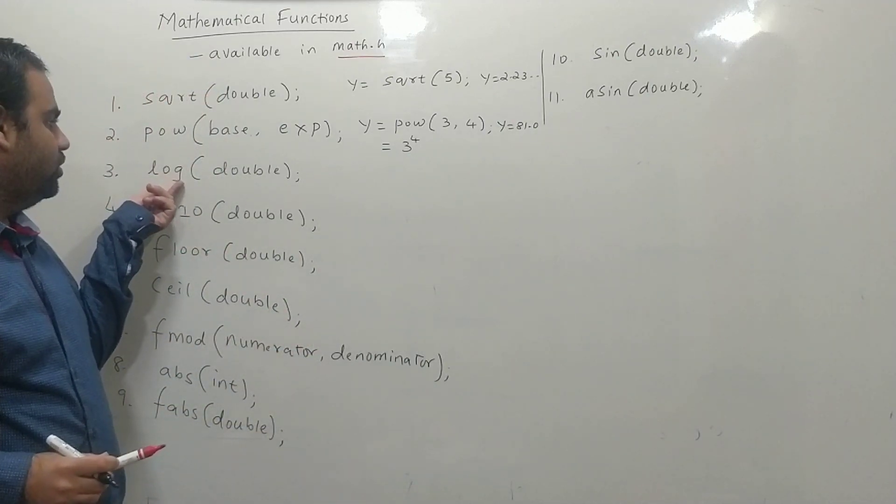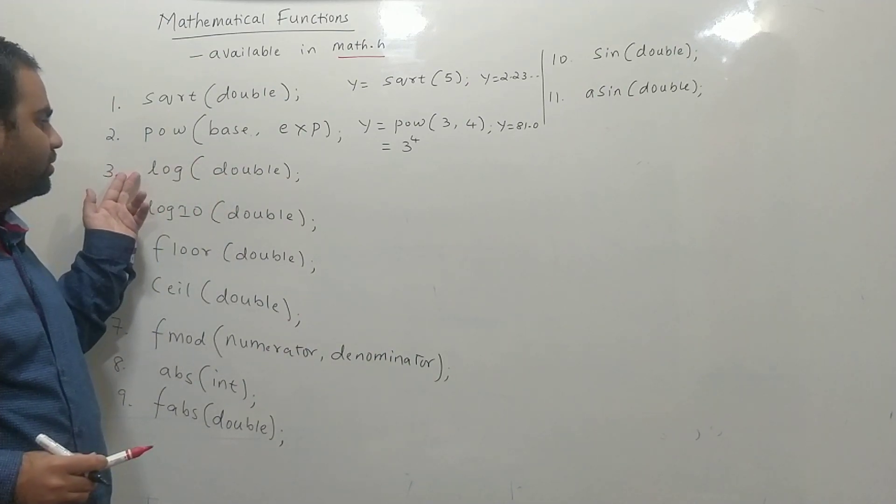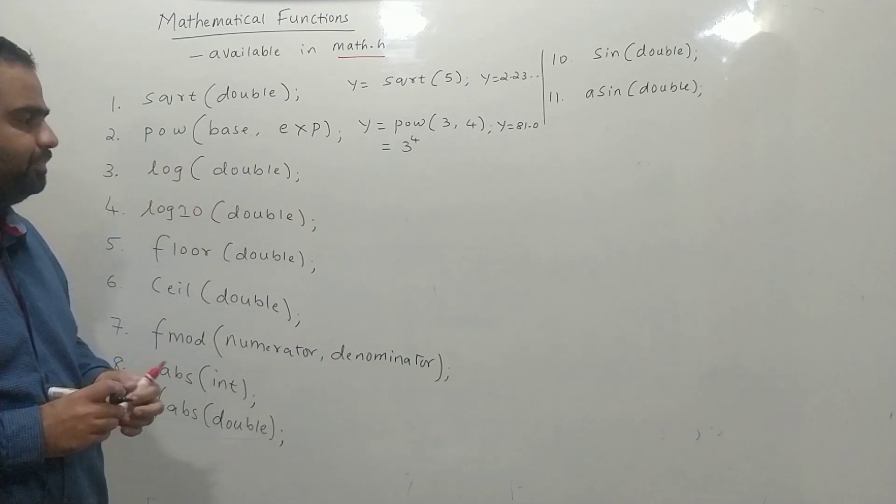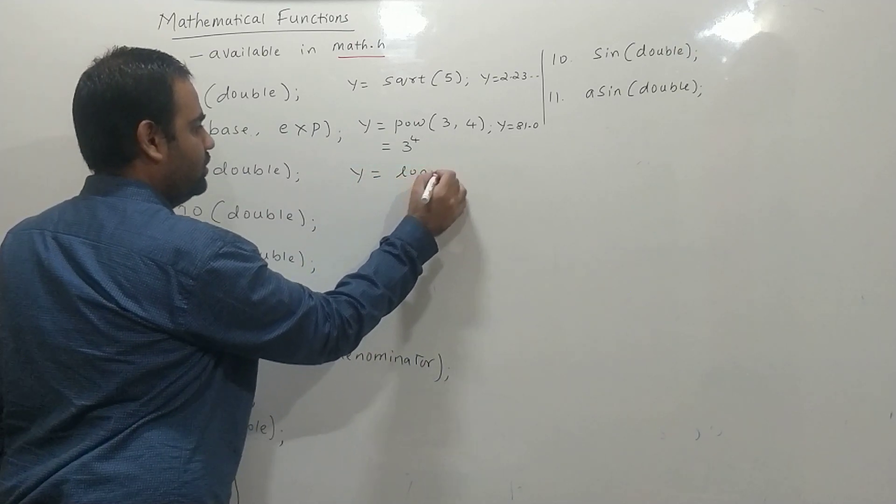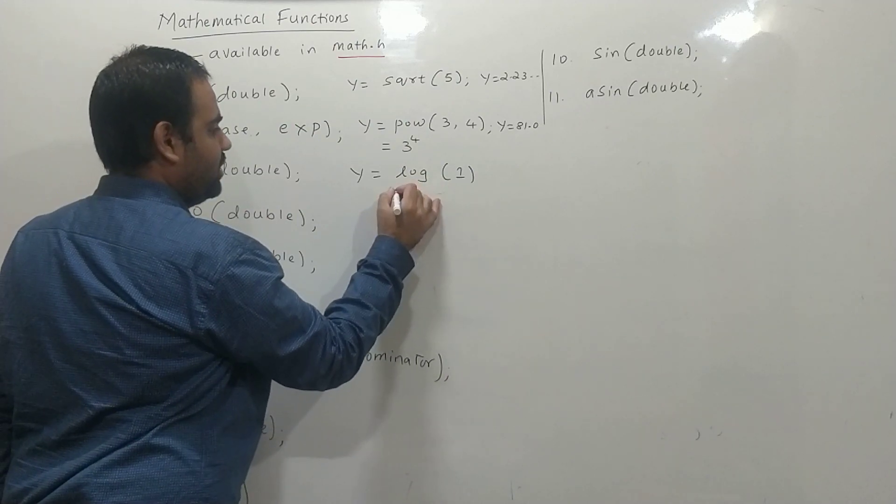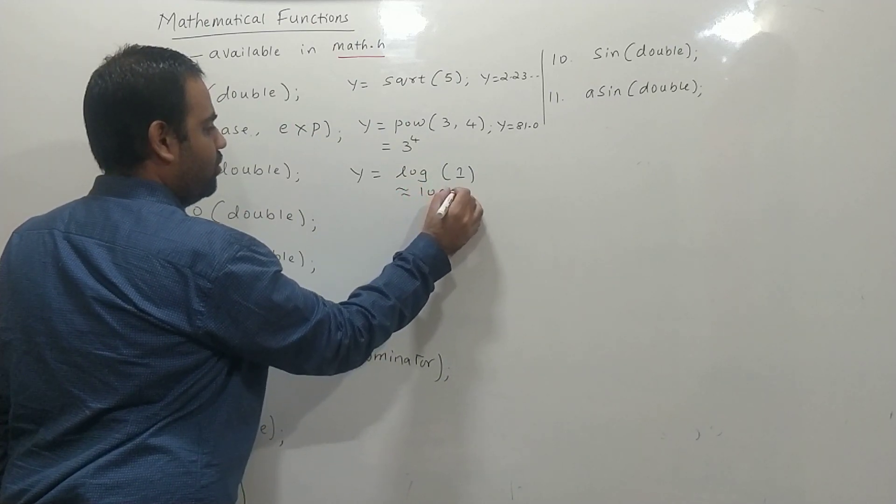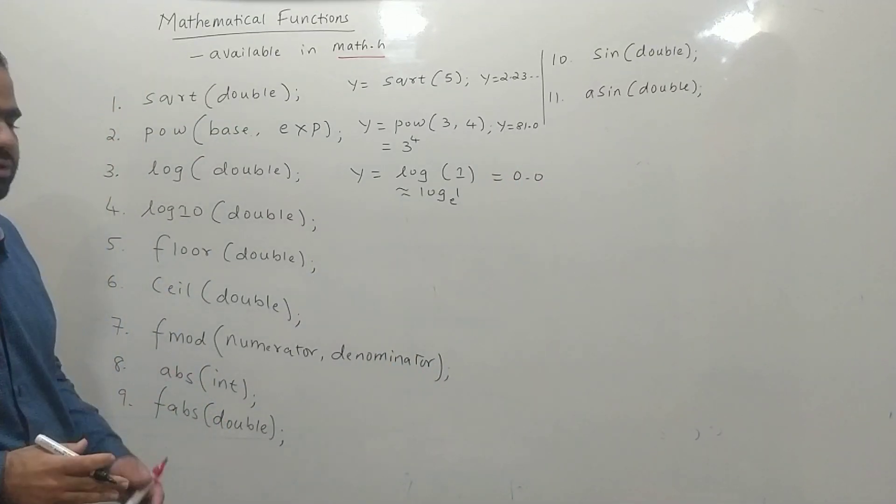The next thing is log. Log of any number in real form will give the answer in base e. For example, if we write y equals log of 1, in mathematics this is the same as log 1 to the base e and it will give answer as 0.00. The answer given is again in double data type.